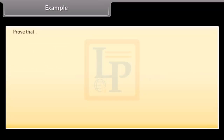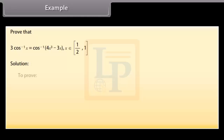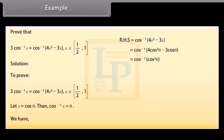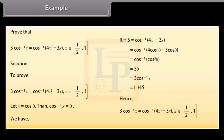Example: Prove that 3cos⁻¹x = cos⁻¹(4x³ - 3x) for x ∈ [1/2, 1]. Solution: Let x = cos θ, so cos⁻¹x = θ. The right-hand side equals cos⁻¹(4cos³θ - 3cosθ) = cos⁻¹(cos 3θ) = 3θ = 3cos⁻¹x, which equals the left-hand side. Hence 3cos⁻¹x = cos⁻¹(4x³ - 3x) for x ∈ [1/2, 1].